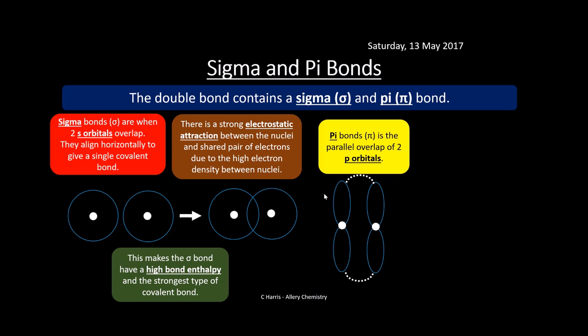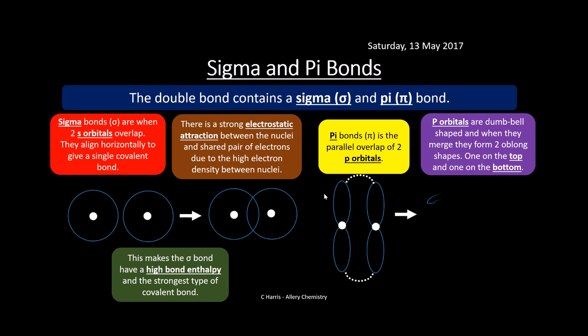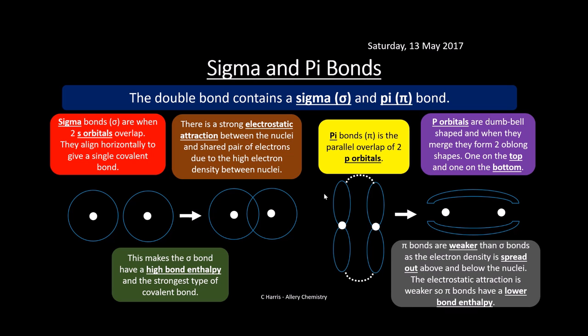Pi bonds are slightly different — these involve a parallel overlap of two p orbitals. The p orbitals are shaped like a figure of eight, and they merge to form a dumbbell shape: two oblong regions, one on top and one on the bottom — a bit like a hot dog bun. Pi bonds are weaker than sigma bonds, so it's easier to break a pi bond. The electron density is spread over a larger area, giving a lower bond enthalpy.